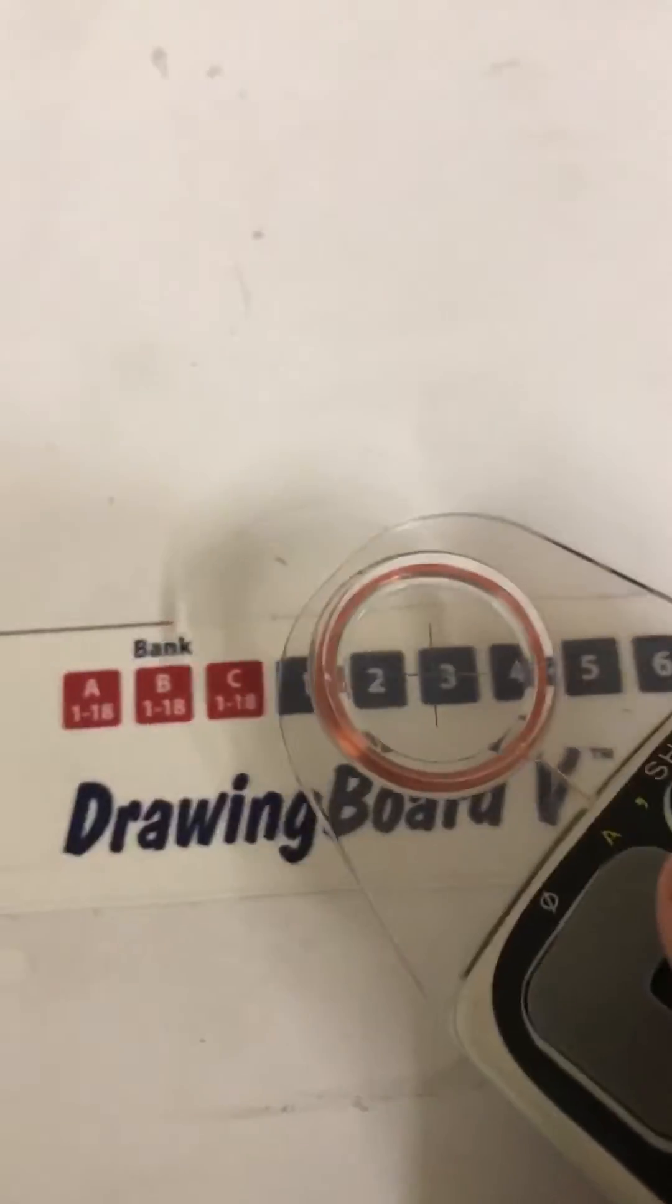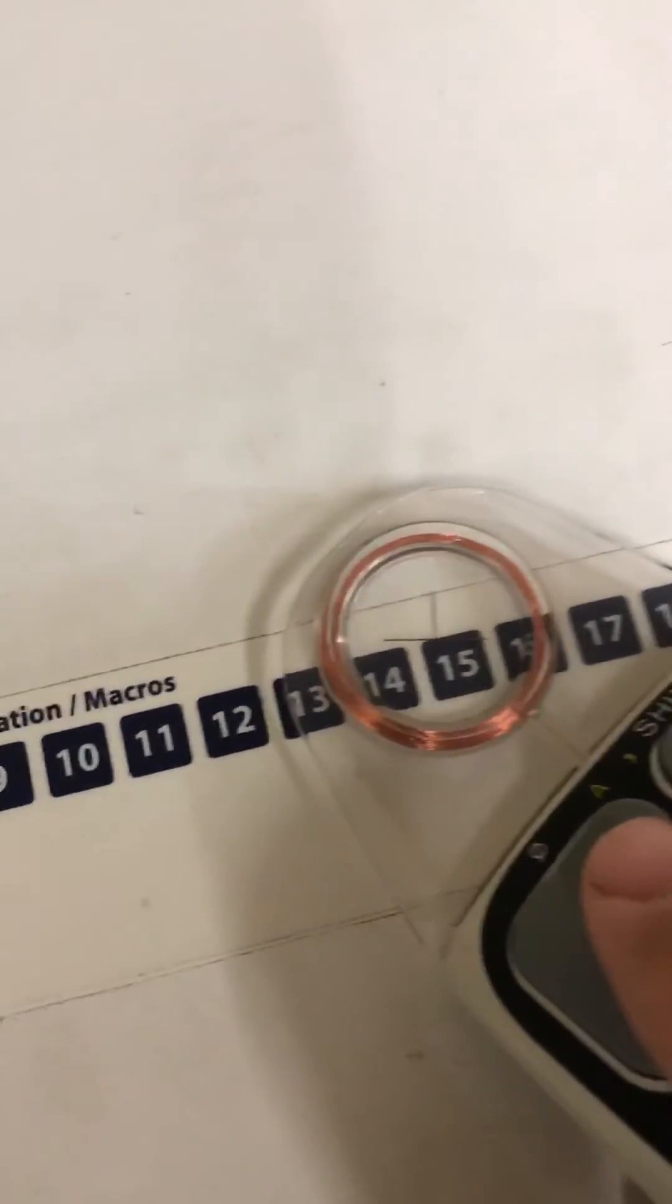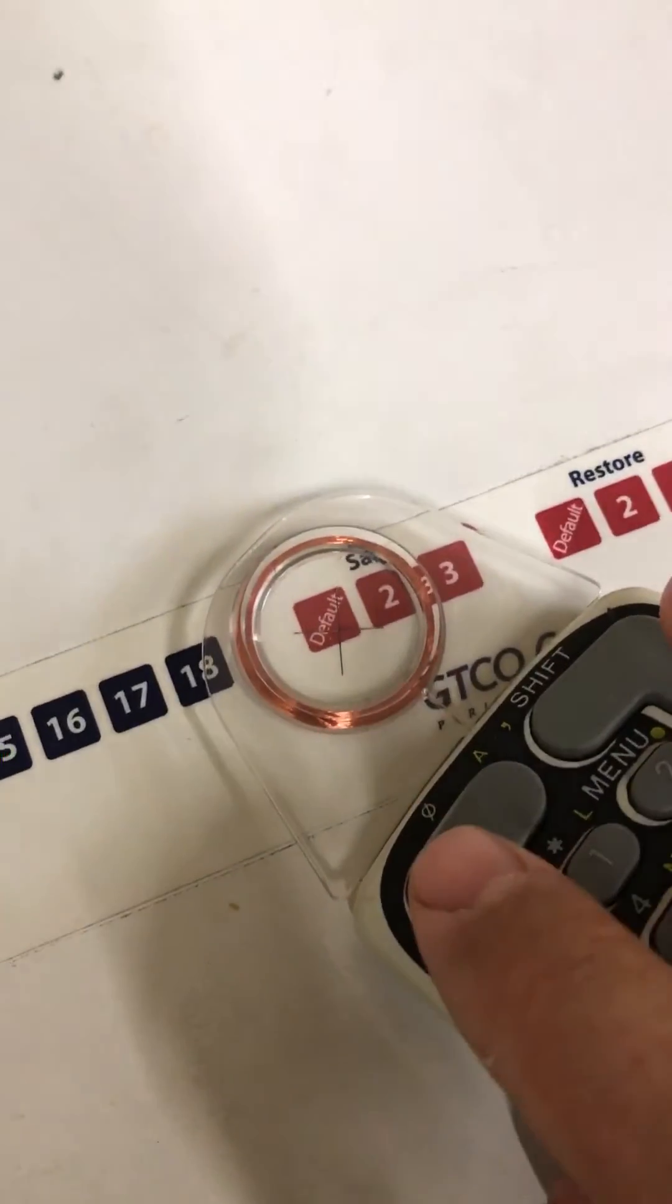So you push A, go one to eighteen, and then push B, go one to eighteen and check it against that table. C, one to eighteen, and then push save default right here.